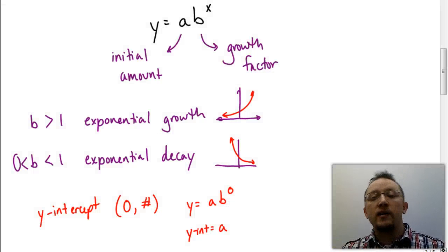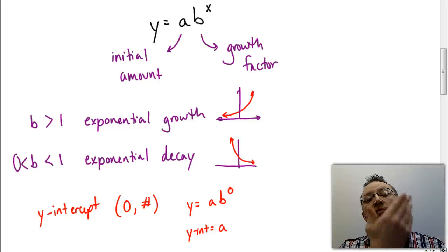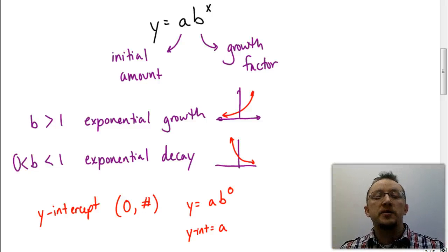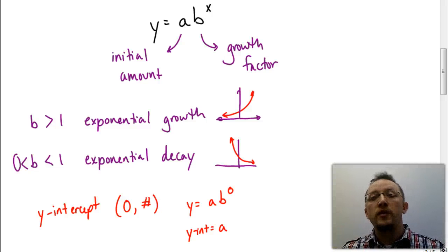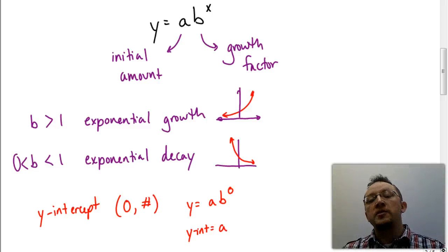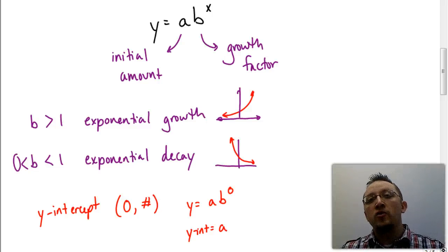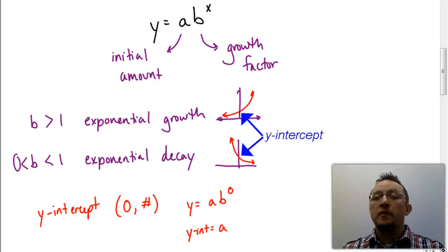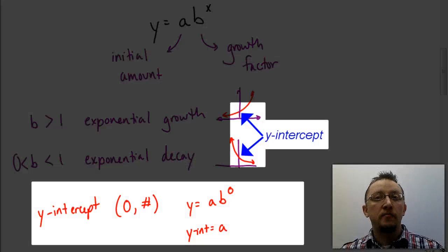So knowing that: if b is a number larger than one, the graph is going to be increasing as x increases. If b is between zero and one — a decimal or fraction between zero and one — then the graph is going to be decreasing over time. That tells us the shape of the graph. The other important thing is the value for a, the initial amount, because both these graphs do intersect the y-axis.